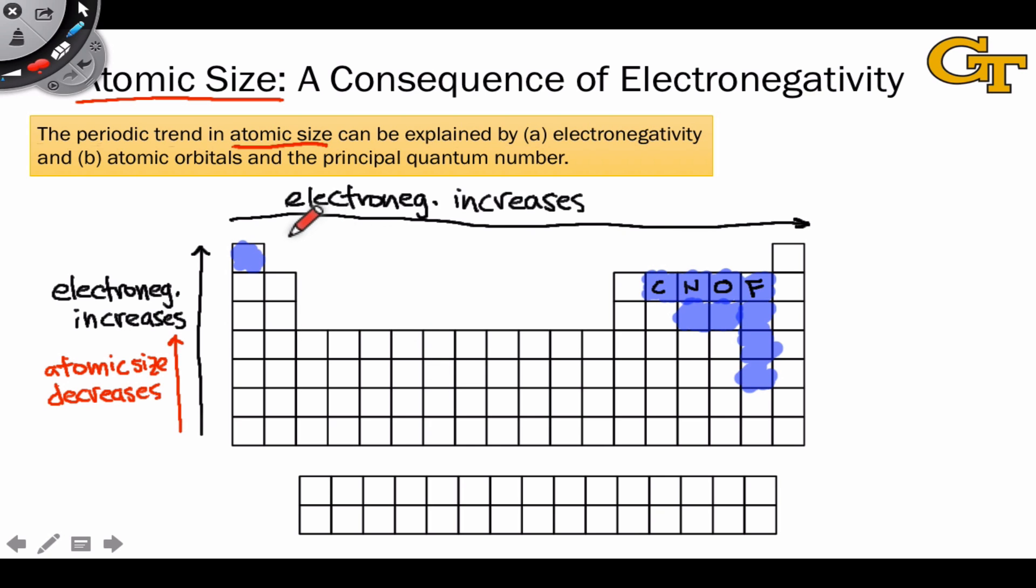And as you might expect for a trend that really has electronegativity at its root, as we move left to right across a period, atomic size also decreases.